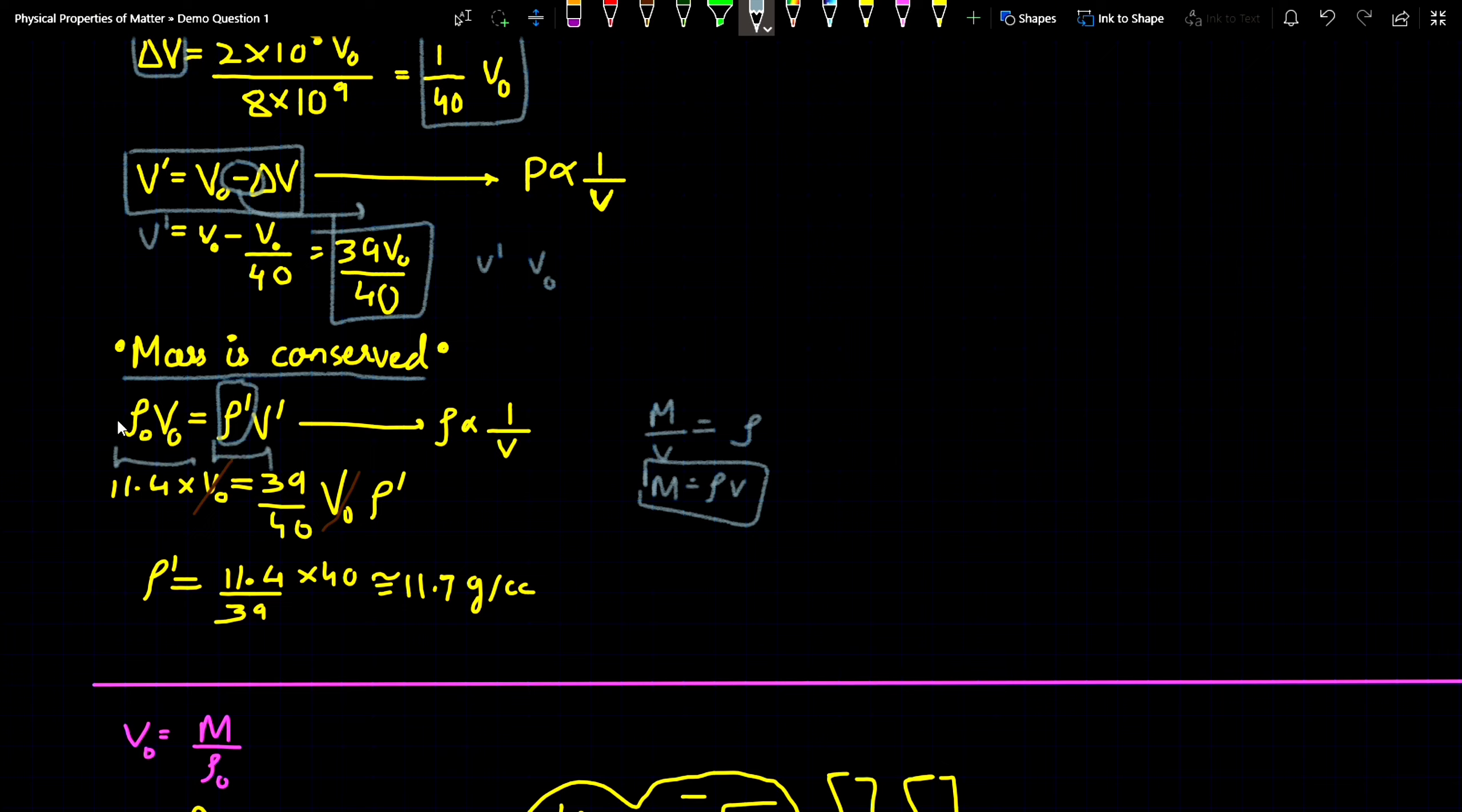We know the value of ρ₀, we know the value of V₀, we also know the value of V'. Just we have to find this ρ'. By calculating the value of ρ', we get ρ' equals to approximately 11.7 g/cm³.